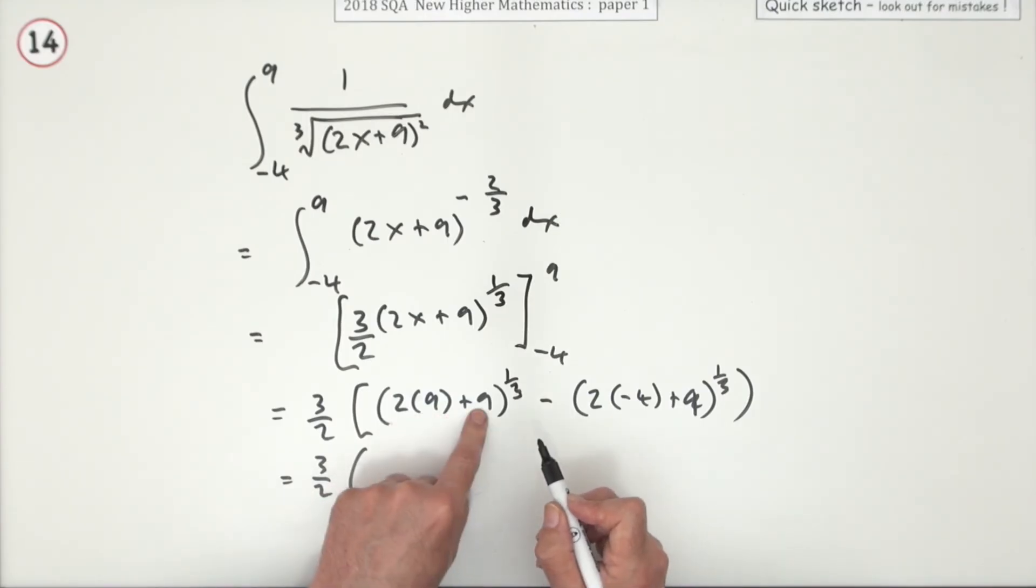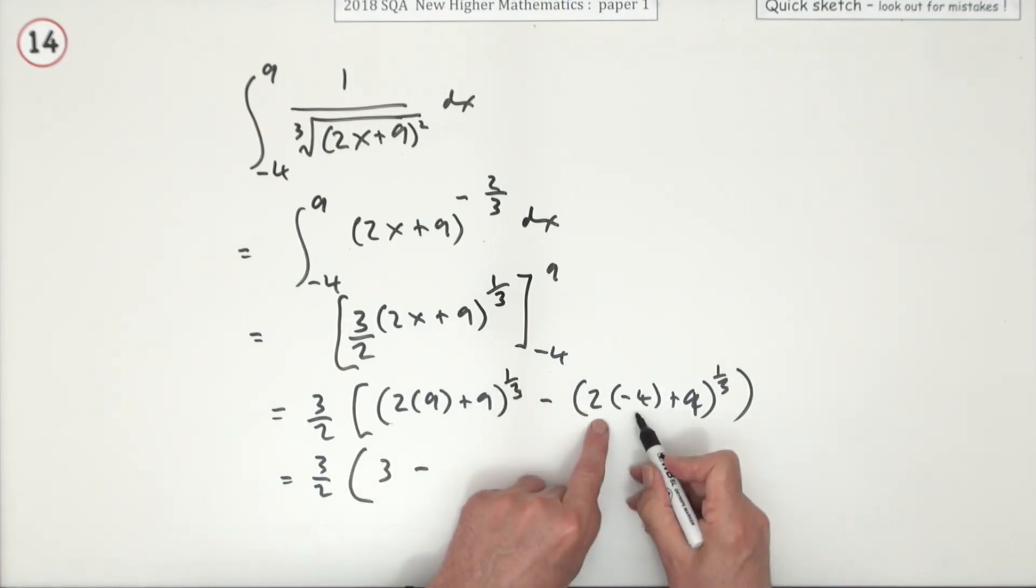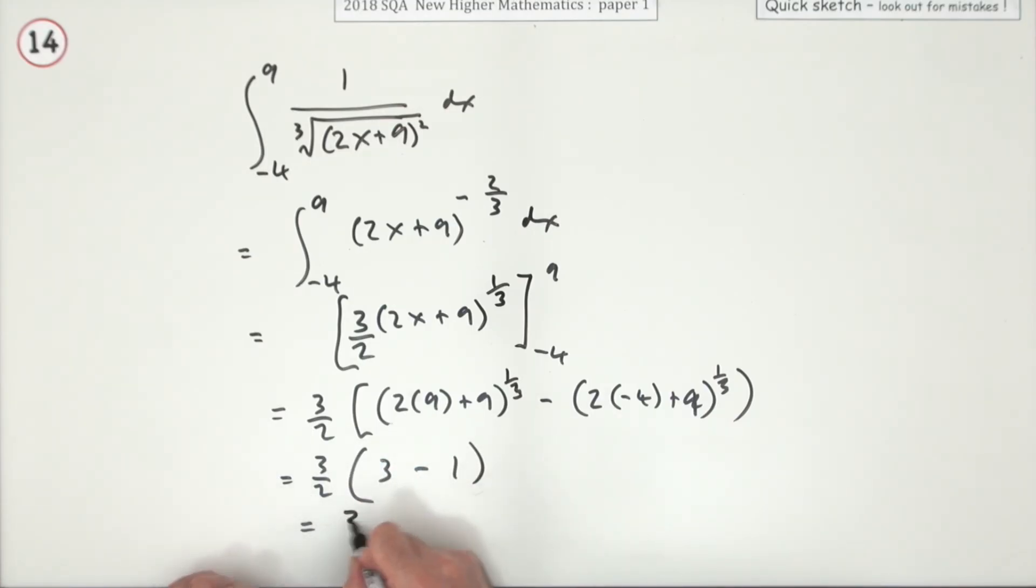Well, 18, 27, 27 to the power of a third. Cube root of 27 is 3. Negative 4, that's negative 8. Add on 9 is 1. Cube root of 1 is still 1. So that comes to 2. So that's 3 upon 2 times 2. So the answer is just 3.